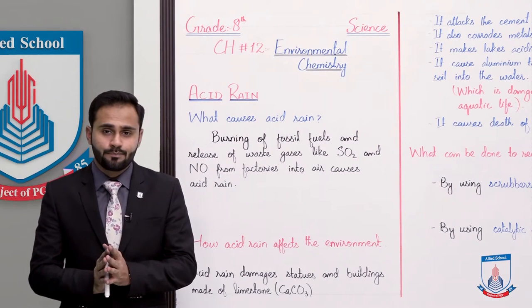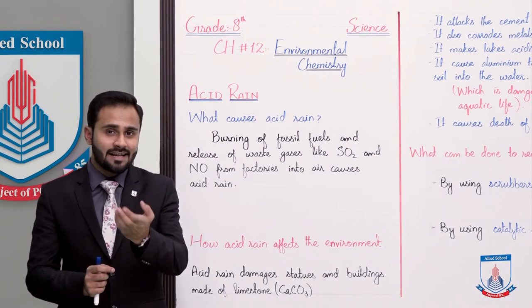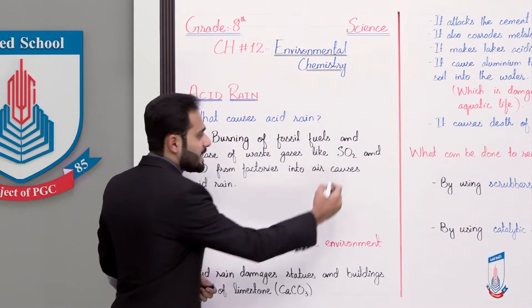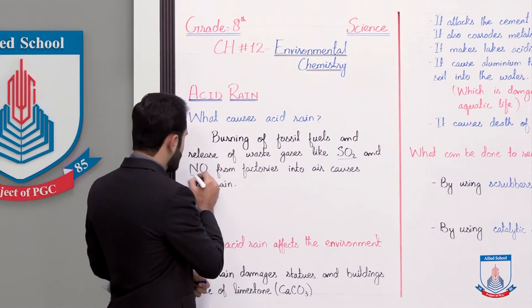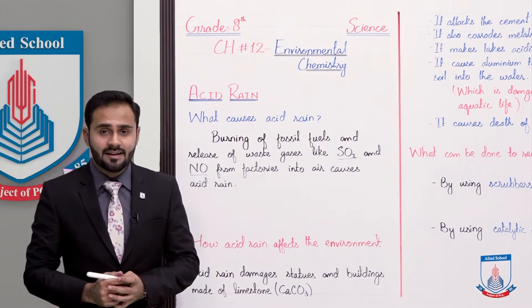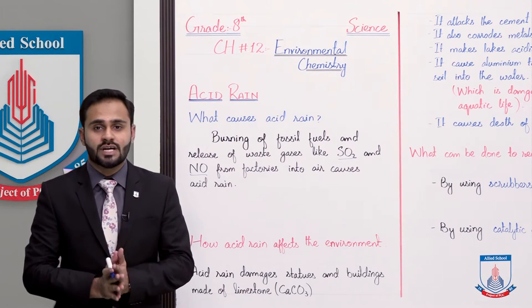I am repeating again, the gases coming out from factories or power plants, which gases are these? That is sulphur dioxide gas and nitrogen oxide gas. These gases react with air in the presence of sunlight, then acid rain is caused.